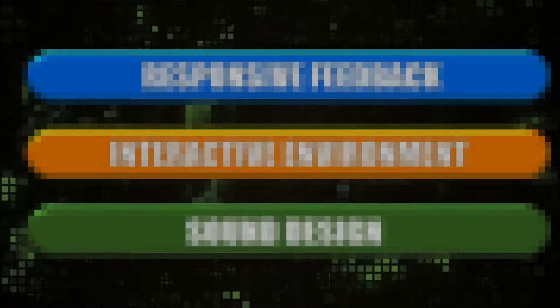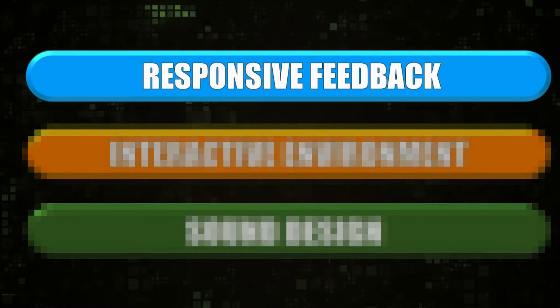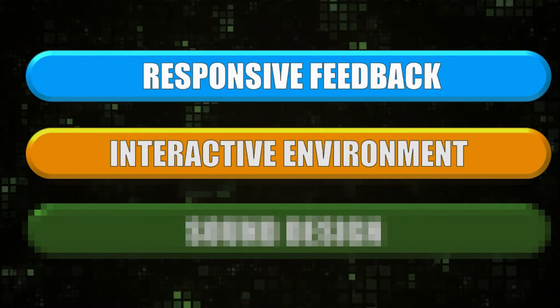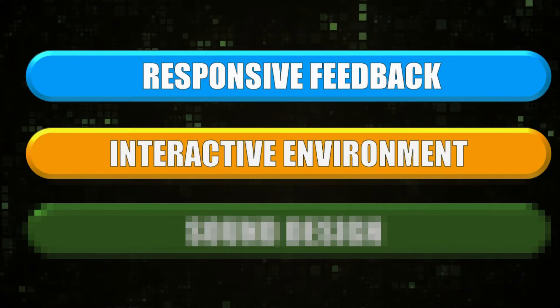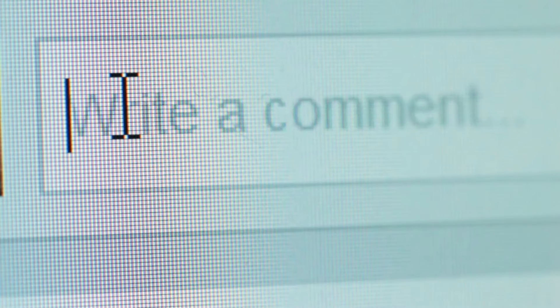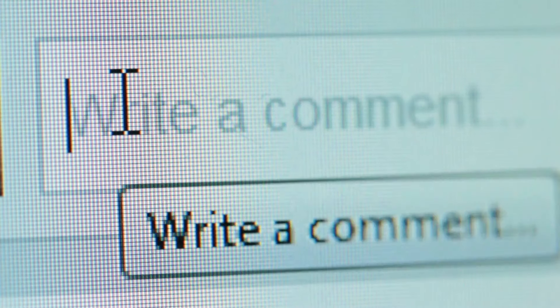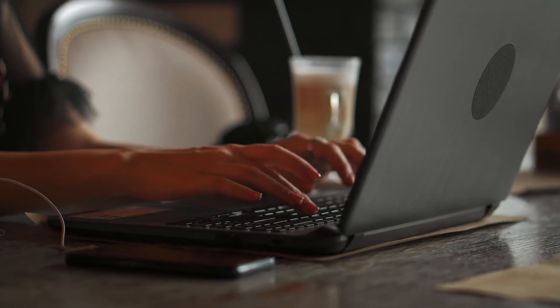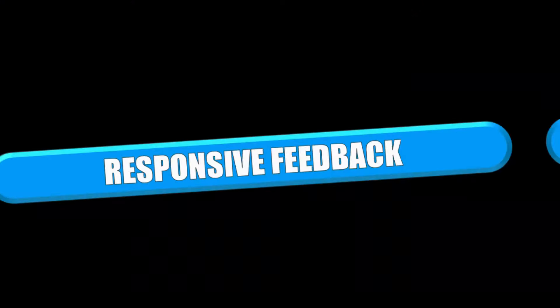So how do you add this game juice to your game? There are quite a few ways to juice up your game, but I'll be focusing on three main categories: responsive feedback, interactive environment, and the last one — I want you to try and guess. Tell me down below in the comments what you think the third category is. With that said, let's jump straight into the first category: responsive feedback.